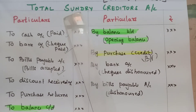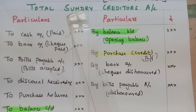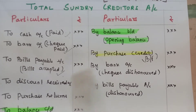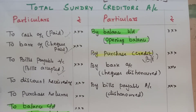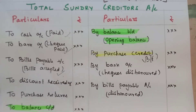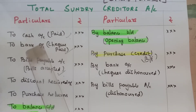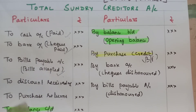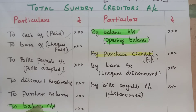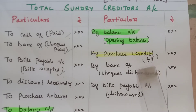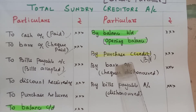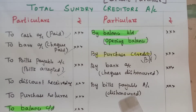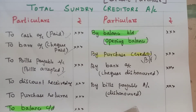So this is the creditors account - it is a liability. There is the opening balance on the credit side. Closing balance is on the debit side. From the closing balance, the credit side includes: cash paid, bank, bills payable, discount, purchase return. The balancing figure is credit purchase on the credit side. Bills and discount are on the debit side.